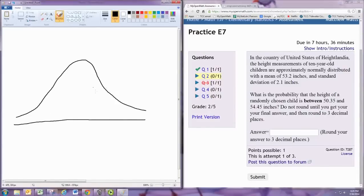Here's your normal curve, and you know that in the middle you have your mean, which is 53.2. So 50.35, that's over here, right there.